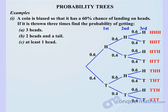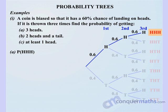We need to find the probability of getting three heads — that is, the probability of head AND head AND head. Looking at those branches: 0.6, 0.6, and 0.6 again. We multiply the branches together, and that works out to be 0.216.